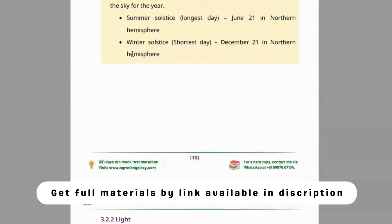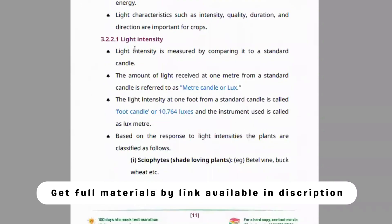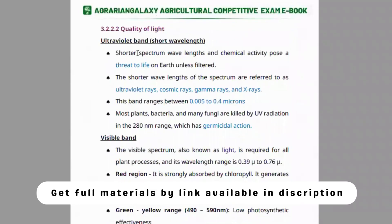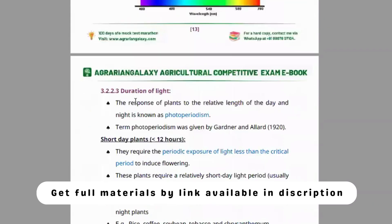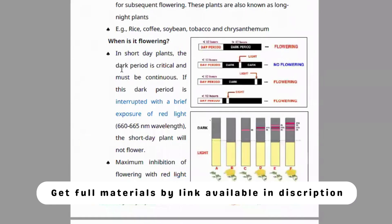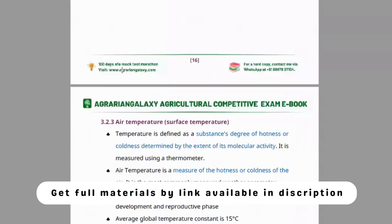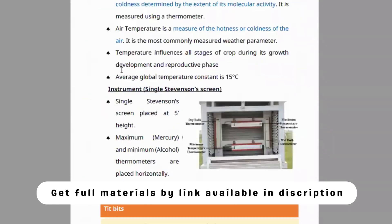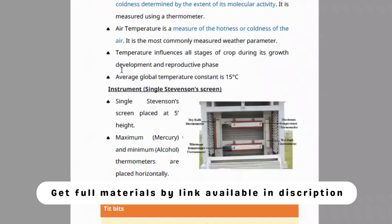The next weather element is light — light intensity, quality of light, the ranges of visible light, ultraviolet ranges, and infrared radiation. Duration of radiation is also covered: short day plants, long day plants, and day neutral plants. Next is air temperature — instruments used for measuring air temperature and soil temperature.